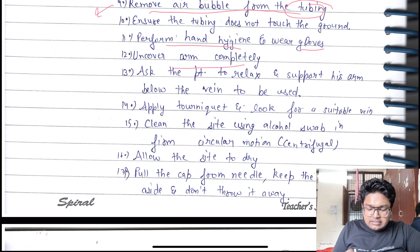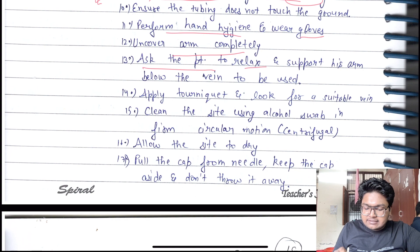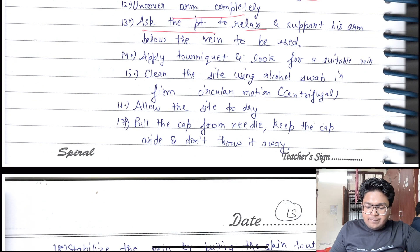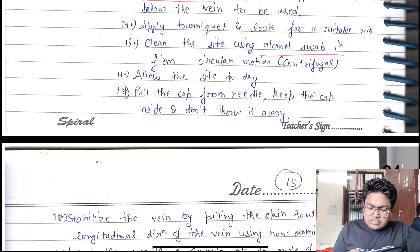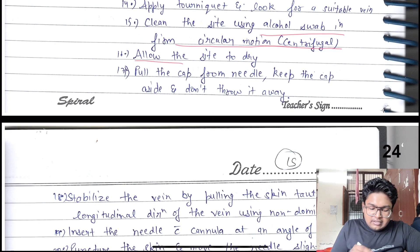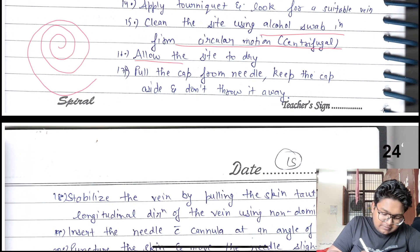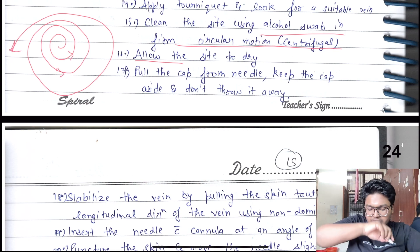Perform hand hygiene via gloves, uncover the arm completely, ask the patient to relax, support the arm below the vein, apply tourniquet, and look for a suitable vein. Clean the site using an alcohol swab in a circular motion from inside to outside to prevent infections.